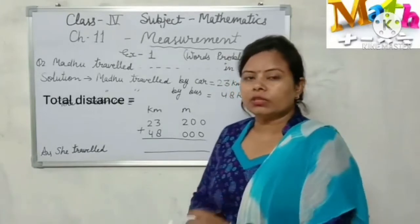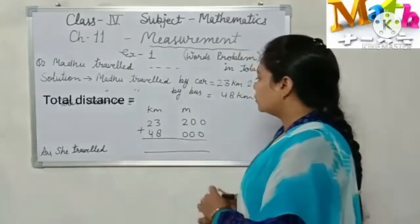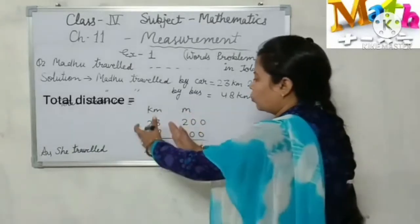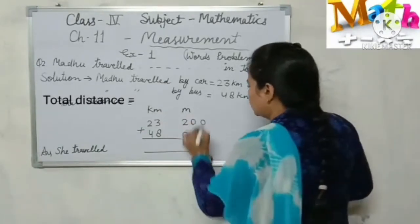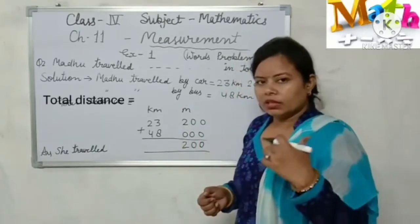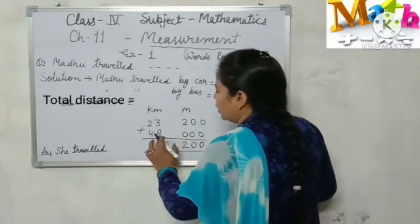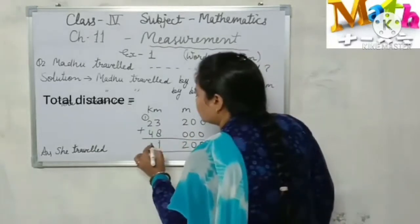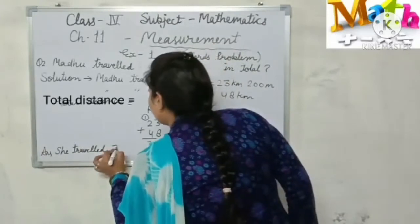Let's start. To find the total distance, what will we do? Very good, we will do addition. So first of all we write the numbers in proper columns. Look at here, kilometer in kilometer column and meter in meter column. Now solve it. 0 plus 0 is 0, 2 plus 0 is 2. 8 plus 3 is 11, carry 1. 2 plus 1 is 3, 3 plus 4 is 7. So Madhu traveled 71 kilometer